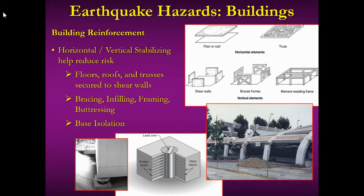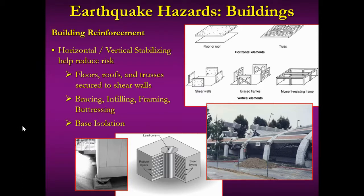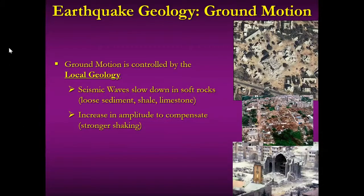Buildings can be reinforced to retrofit them to withstand earthquake shaking. Horizontal and vertical stabilizations can be added where floors, roofs, and trusses are secured to shear walls. Bracing, framing, and buttressing techniques reinforce the actual structure. There are even base isolators — like shock absorbers — with a lead core with rubber and steel interlayers that absorb shock on buildings not originally designed to code. So timing matters, buildings matter, and ground motion matters.